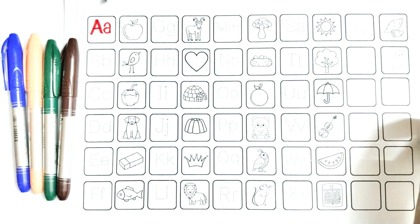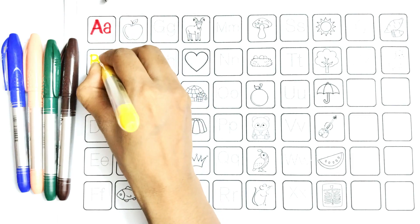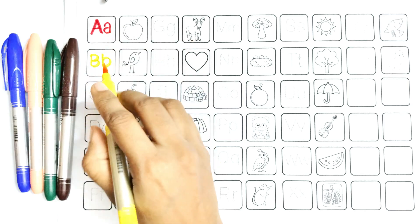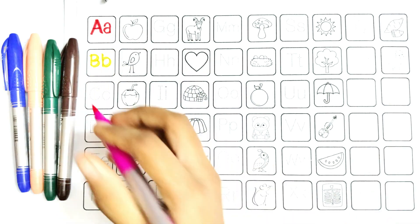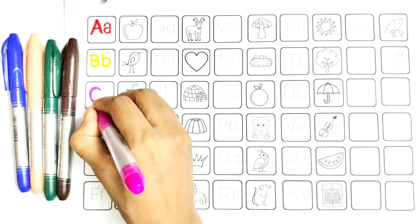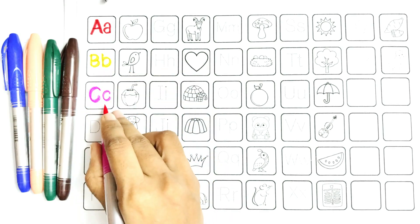Write with me B. Say with me: B, B is for bird. C, say with me: C, C is for coconut.